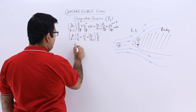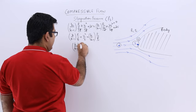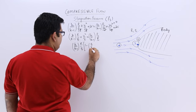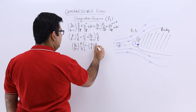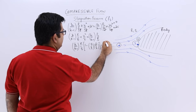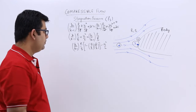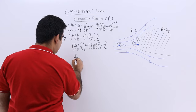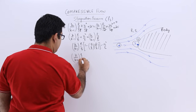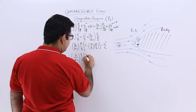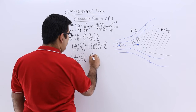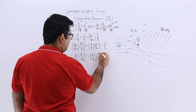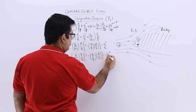Let us bring this entire part on the left-hand side and bring the velocity onto the right-hand side. Taking p1 upon ρ1 common, you will have k upon k minus 1 into p1 by ρ1 times 1 minus (ρ1 by p1 into ps by ρs) equal to minus v1² upon 2. Rearranging: k upon k minus 1 into p1 by ρ1 minus (1 minus ρ1 by ρs into ps by p1) equals minus v1² by 2.